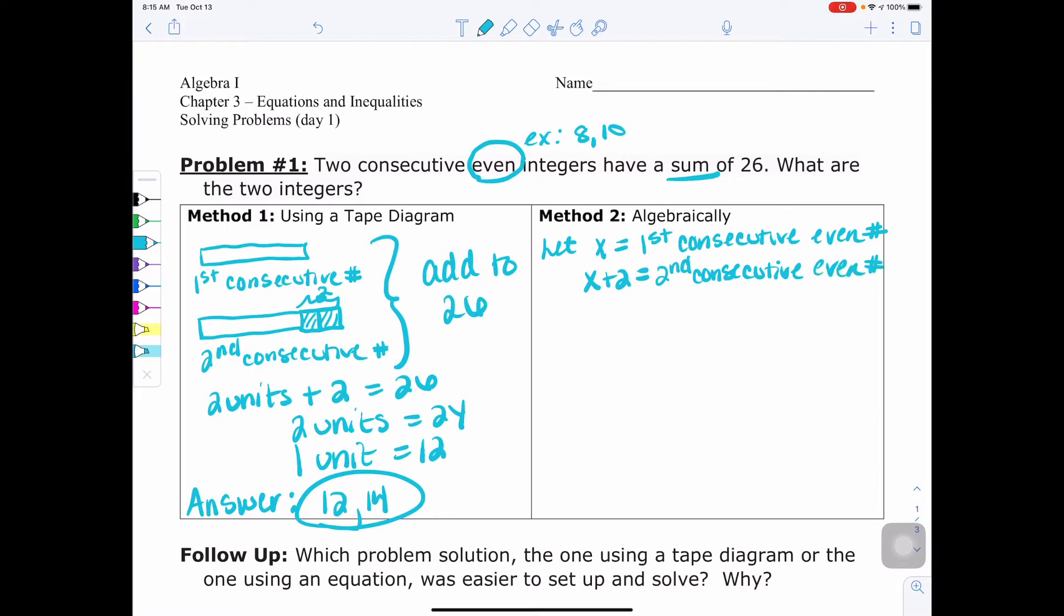So now we have a sum of 26. So I would take x and also add it to x plus two to get a total of 26. Now we would use our solving equations steps as always. We would look for distributive. We don't have it. Next, we look for like terms. We have like terms on the left. x and x makes two x plus two equals 26.